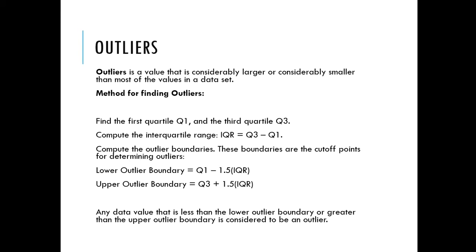And it's okay if that number is negative. A lot of times it will be, don't let that throw you. To get the upper outlier boundary, you do Q3 plus 1.5 times the IQR. Again, remember the IQR is Q3 minus Q1. So any data value that is less than the lower outlier boundary or greater than is considered an outlier.